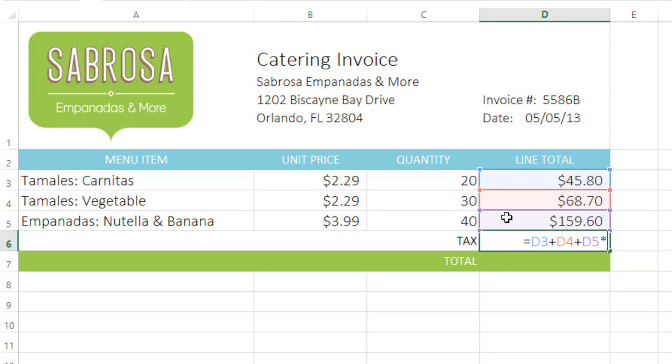Next, I'll multiply by .075, which is the tax rate at 7.5%. Now, this may look like it's going to give us the correct answer, but it's not. That's because we didn't follow the order of operations. Remember, multiplication comes before addition. So Excel is going to multiply D5 by .075 first. Then it'll add D3 and D4, which isn't what we want.